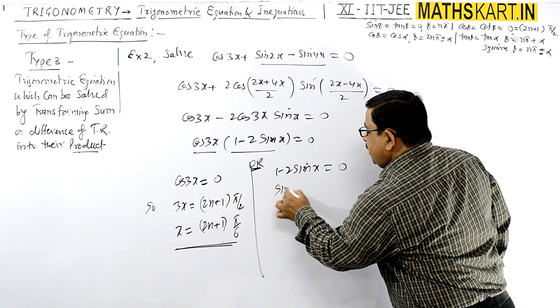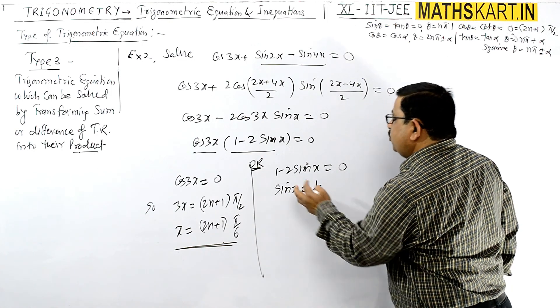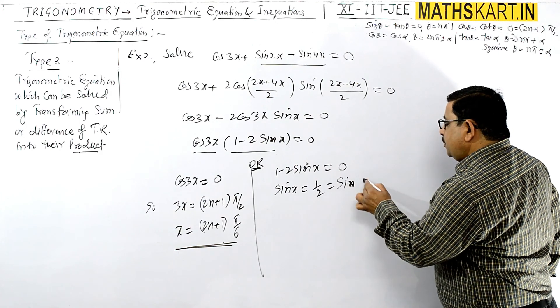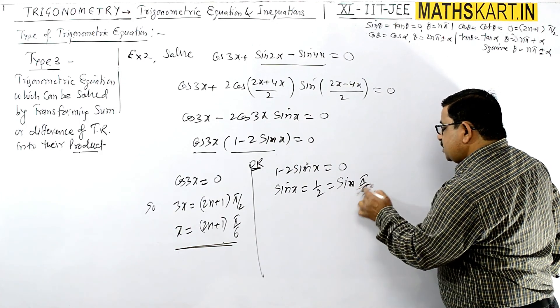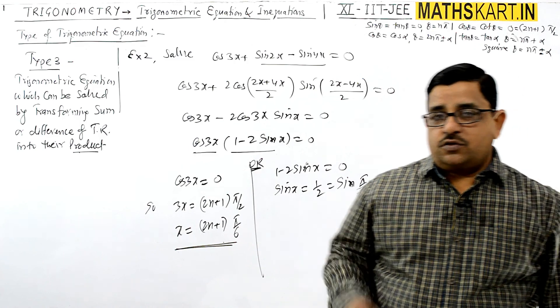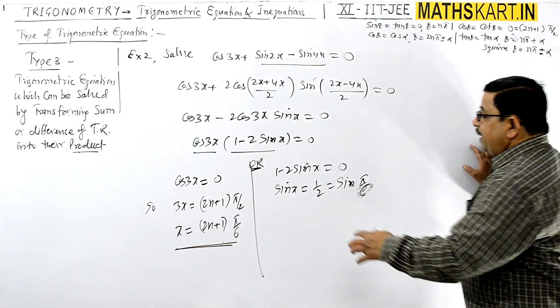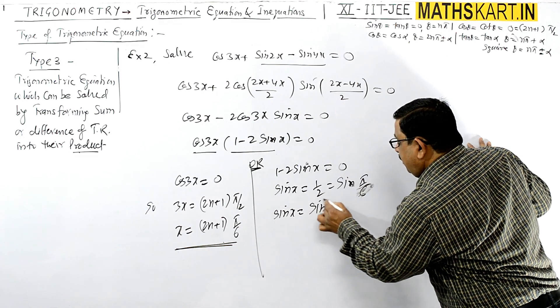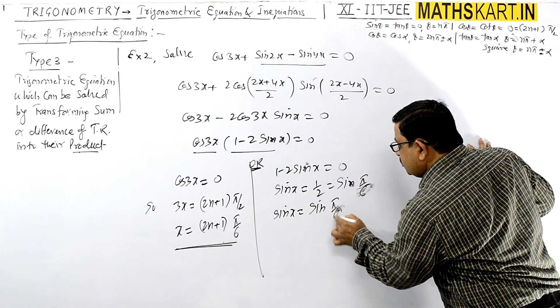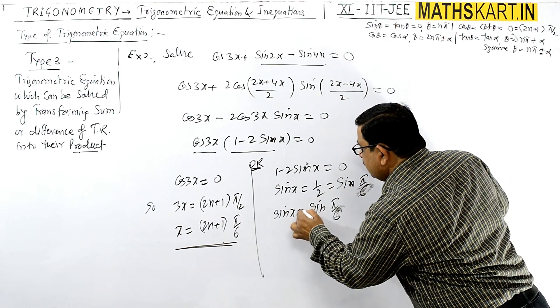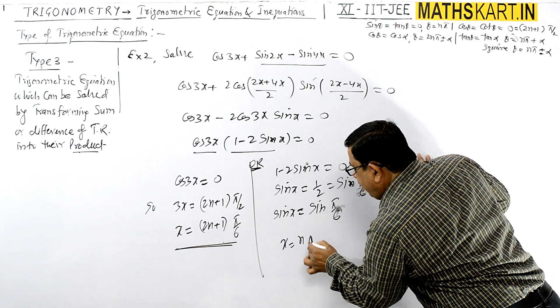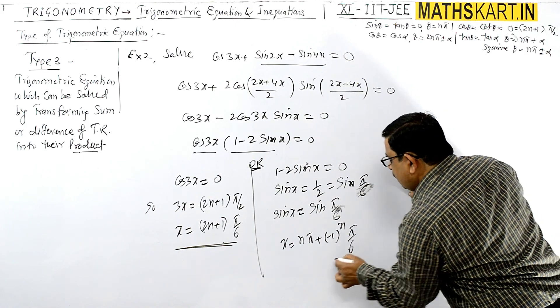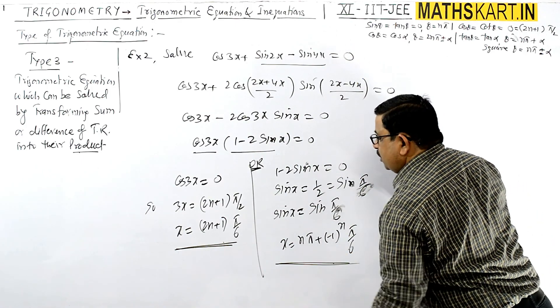For the other factor, sin x = 1/2. This equals sin π/6, since sin 30° = 1/2. So sin x = sin π/6.